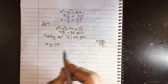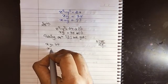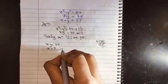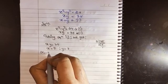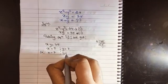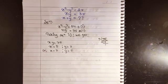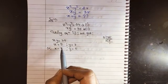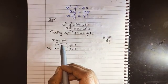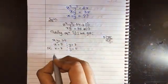Since xy equals 35, we have only two probabilities: x is 5 and y is 7, or x is 7 and y is 5. These are our two options to solve this problem.